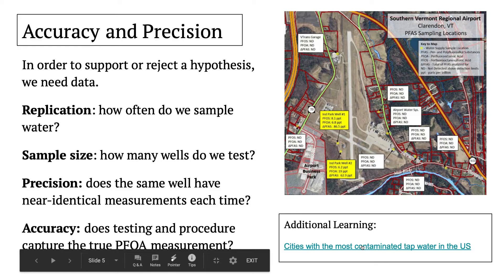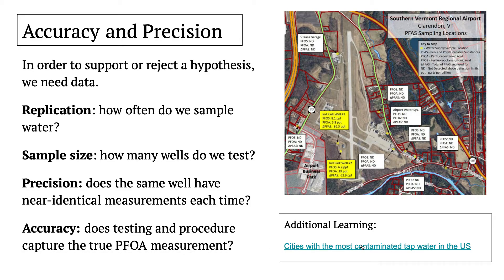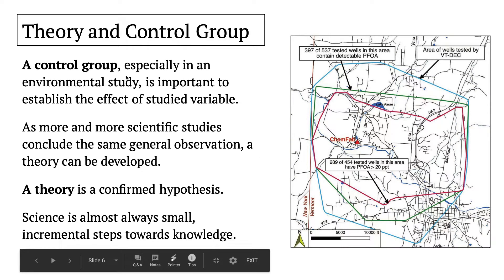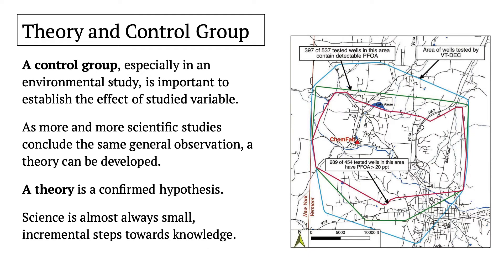Here are the cities with the most contaminated tap waters, if you're interested. So we test, we collect data, we sample, we do replicates of each sample, and we look at our data. Within that data, we want to have some level of a control group. This is really important in an environmental study where there are many different factors influencing our data, because we want to see whether the variables we're measuring have some effect on the dependent variable.